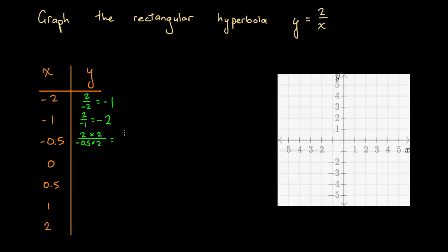So here we get 2 times 2 is 4, and we've got 0.5 times 2 is 1. So minus 0.5 times 2 is minus 1. So 4 over minus 1. Well, a positive divided by a negative is a negative, and 4 over 1 is just 4. So we're going to have minus 0.5 and minus 4 is going to be our coordinate here.